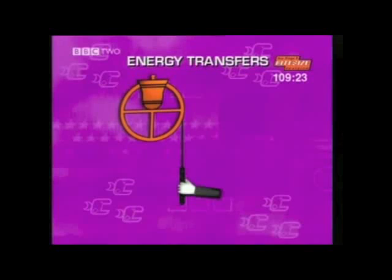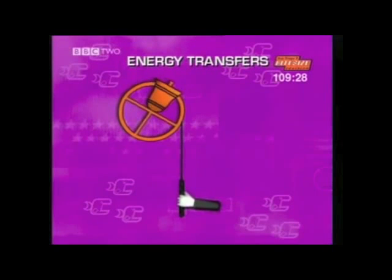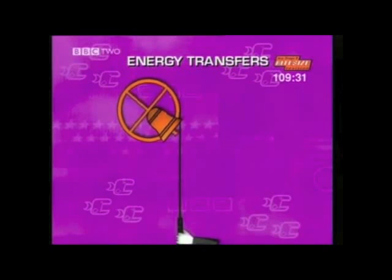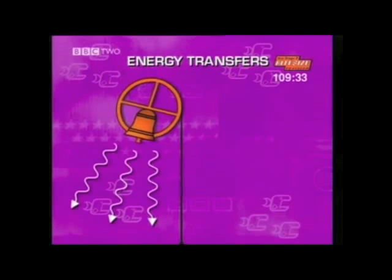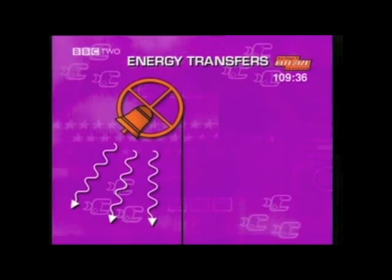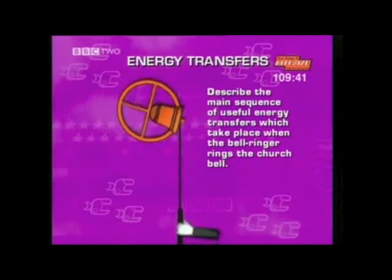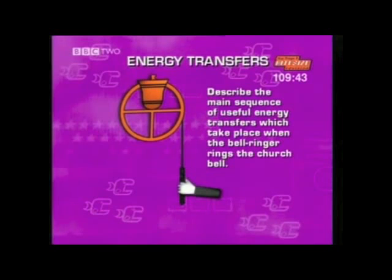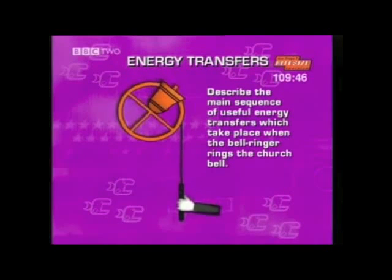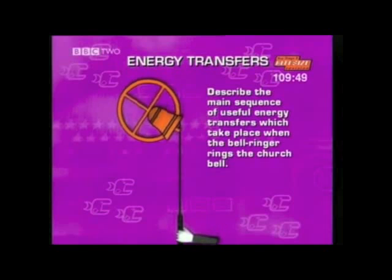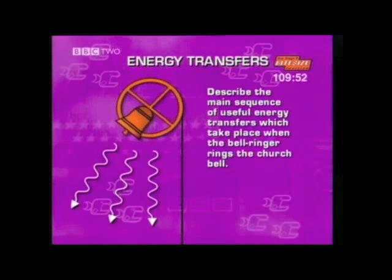Here's a question about energy transfers from a past paper. It's about a bell in a church tower attached to a wheel and balanced upside down. From the edge of the wheel is a rope that the bell ringer can pull to set the bell ringing. The energy given out by the bell was originally stored in the bell ringer. The question: describe the main sequence of useful energy transfers which take place when the bell ringer rings the church bell. Three marks are on offer, so you're looking for three energy transfers — stop the tape and have a go.